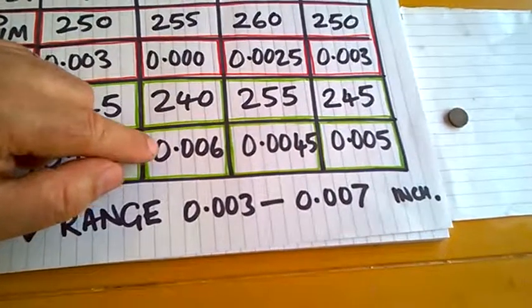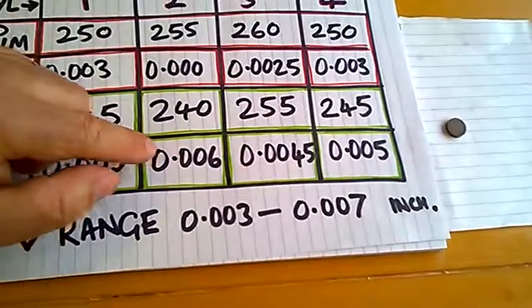6 thousandths is still in range, but it's on the looser end of things, but it's still okay.